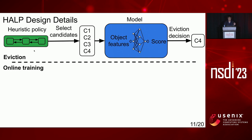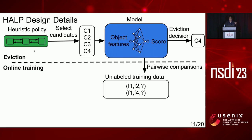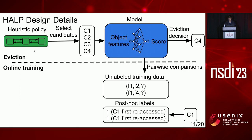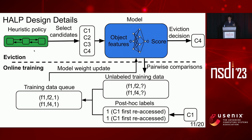For online training, the same pairwise comparisons are also used to generate training data. However, at the time of prediction, the binary label indicating which of the two candidates will be accessed further in the future is not available. Therefore, an initial feature snapshot is taken at the pairwise comparison during eviction and saved as unlabeled training data tuples until one of the candidates is accessed again, making the label available. HELP maintains a collection of pending comparisons that continuously observes all incoming requests, and on the first access to either candidate, a binary label is assigned to construct the training example and later train the model.